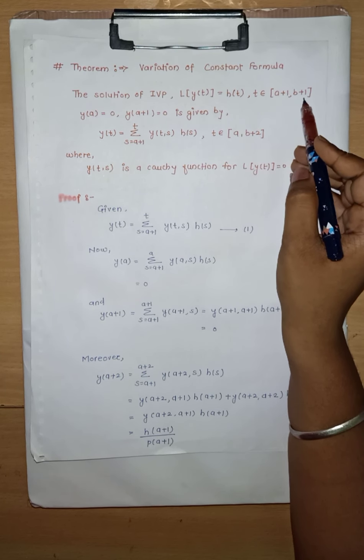That is, y(t) = summation over s from a+1 to t of y(t,s) * h(s), for t in the closed interval [a, b+2], where y(t,s) is a Cauchy function for L[y(t)] = 0 and y(a+1) = 0.